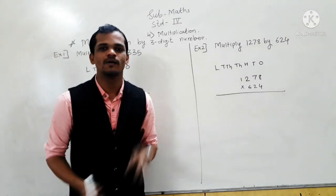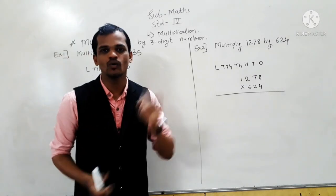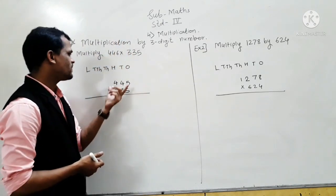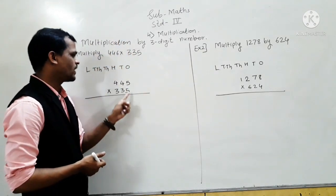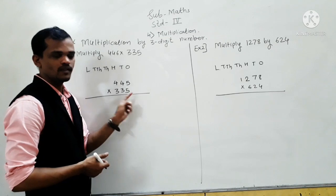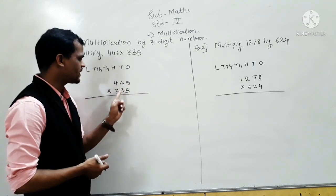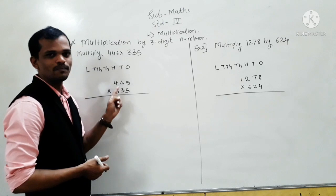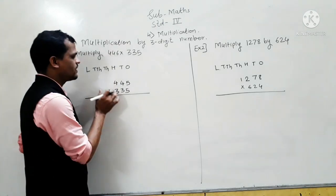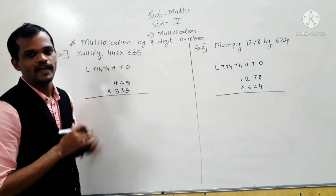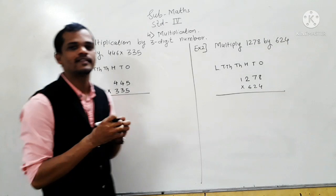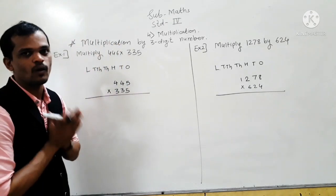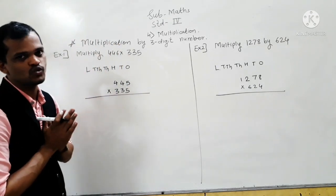We will solve this example in 4 steps. It is very simple. First, multiply the number by the ones place digit. Then multiply the number by the tens place digit. Then multiply the number by the hundreds place digit, and then add those 3 products. Let's start — always start from the ones place to multiply.